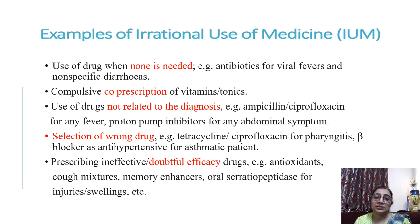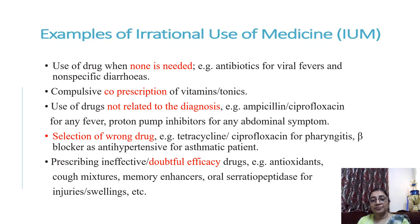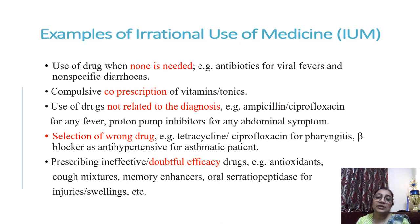Examples of irrational use of medicine include: use of drugs when none is needed, like prescribing antibiotics in viral fever or non-specific diarrhea; compulsive co-prescription of vitamins and tonics simultaneously with antibiotics; use of drugs not related to diagnosis, such as ampicillin or ciprofloxacin for any fever, or proton pump inhibitors for any abdominal pain; and selection of the wrong drug, like tetracycline or ciprofloxacin for pharyngitis, or beta-blockers as anti-hypertensives for asthmatic patients.